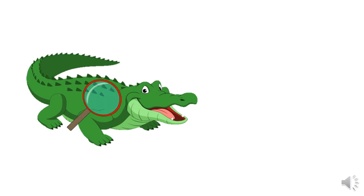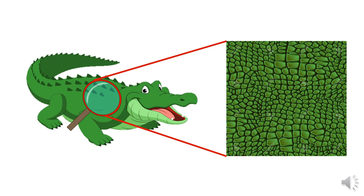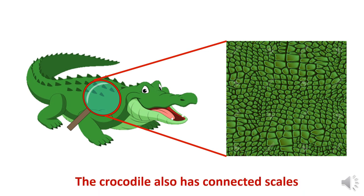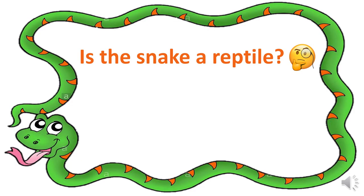So these are connected scales. Now how about the crocodile? Let's look closely at its body — oh look at that! Can you see those? These are also scales, and they are connected also. So the crocodile also has connected scales. How about the snake? Is the snake a reptile? Yes, we said it's a reptile.